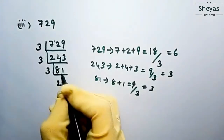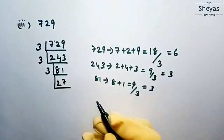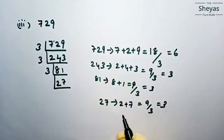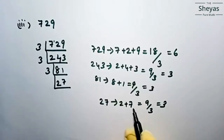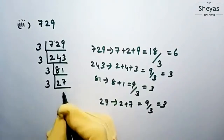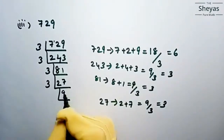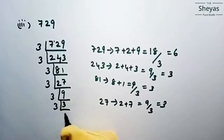Check 27: the sum of digits 2 plus 7 equals 9, which is divisible by 3. So write down 3. Dividing 27 by 3 gives 9. Again 9 is divisible by 3 — 3 times 3 is 9. So dividing by 3 gives 3. And 3 is itself a prime number, so write it as is.